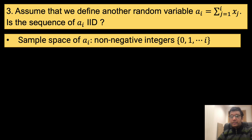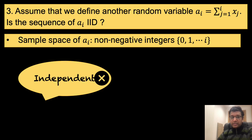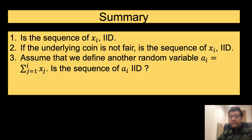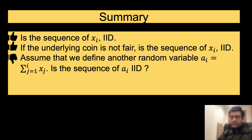Clearly, sequences of a sub i are neither independent nor identically distributed. To summarize: the sequence of x sub i is IID when the coin is fair as well as when the coin is not fair. The sequence of a sub i, where a sub i is the sum of x sub 1 to x sub i, is not IID.